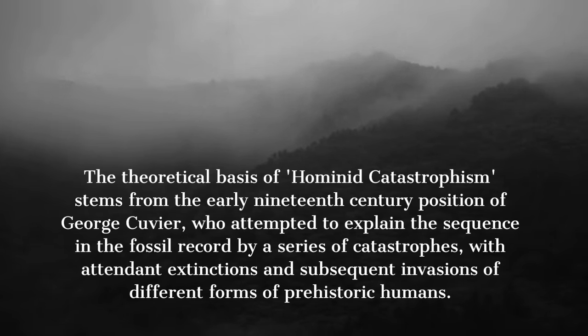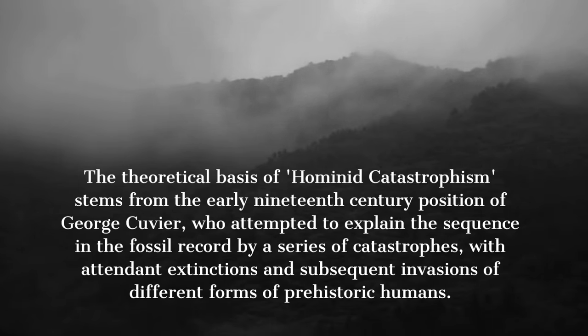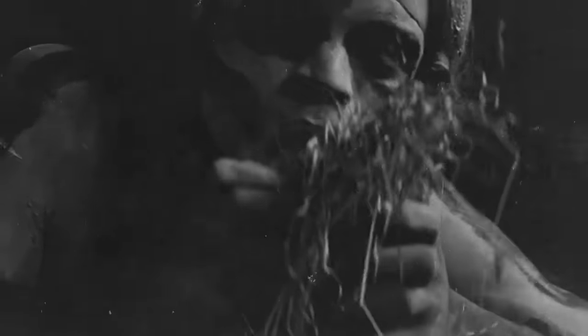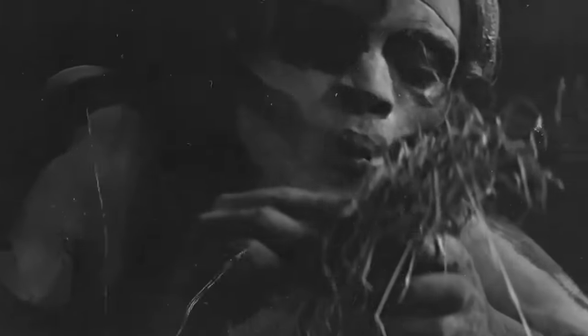The theoretical basis of hominid catastrophism stems from the early 19th century position of George Cuvier, who attempted to explain the sequence in the fossil record by a series of catastrophes, with attendant extinctions and subsequent invasions of different forms of prehistoric humans. Even without specifically labeling it as such, Boule applied this concept to explain the sequence of hominid forms, assuming that none of the fossil men discovered who differed from modern man could be regarded as ancestral to the modern human lineage.